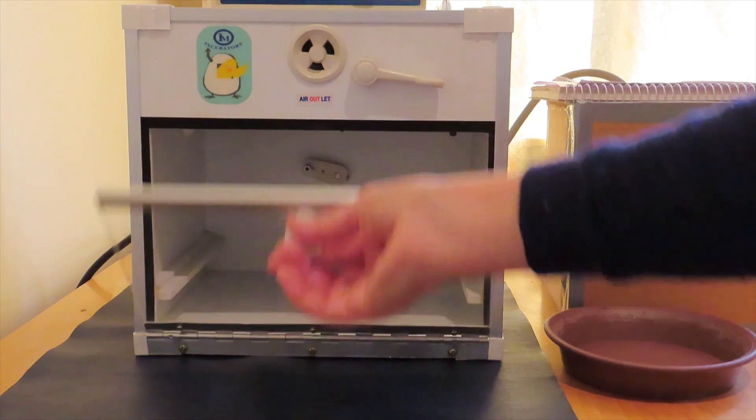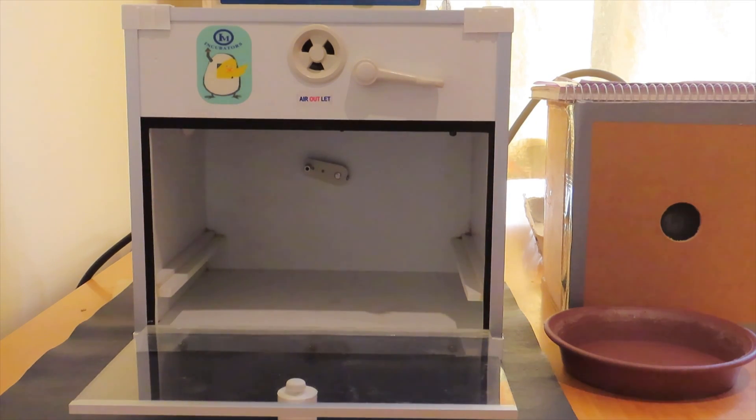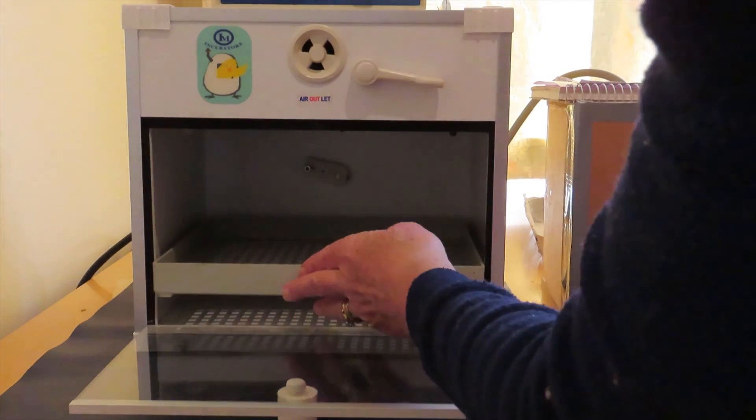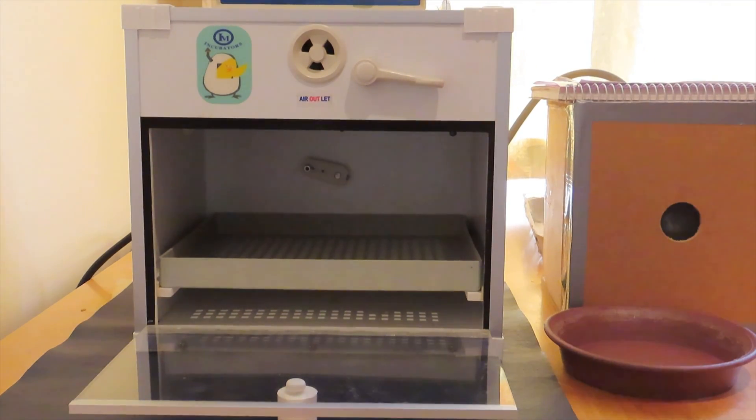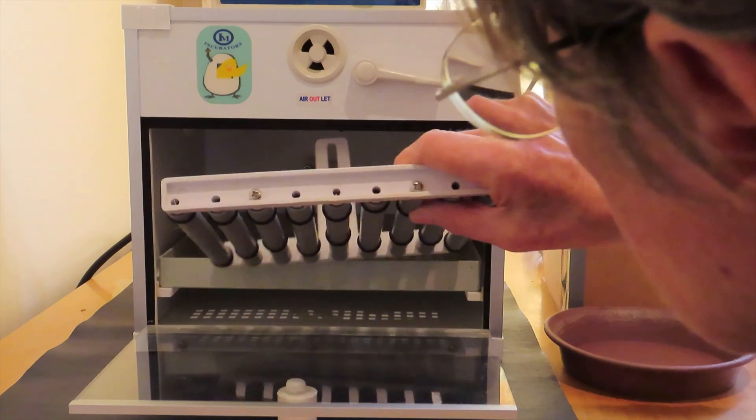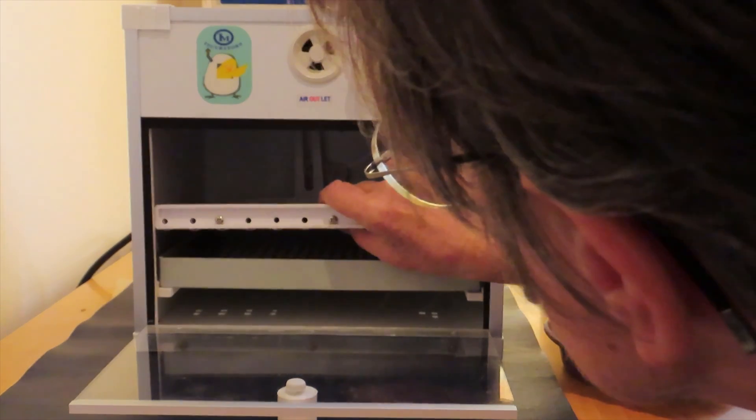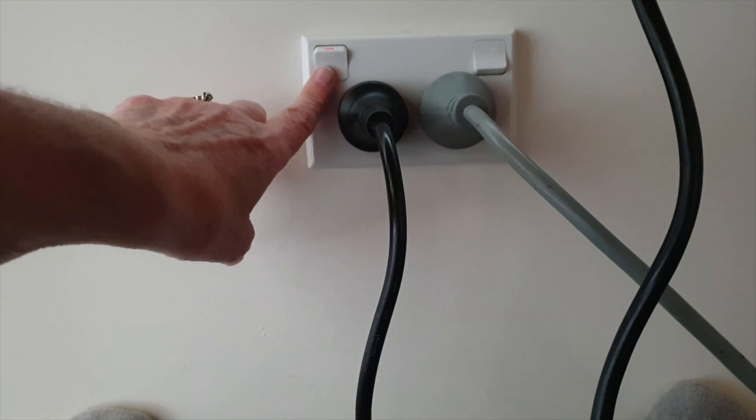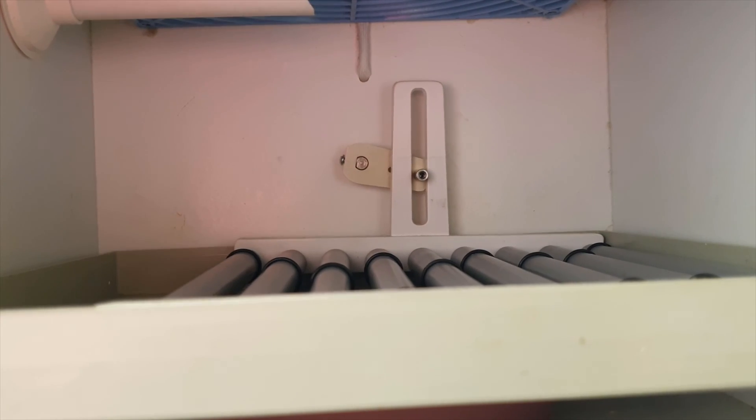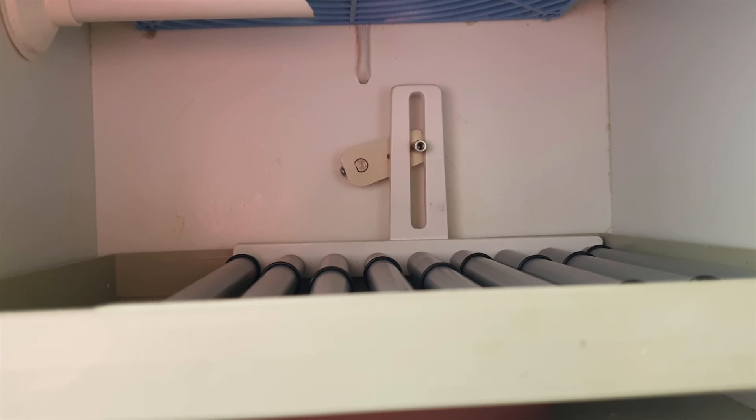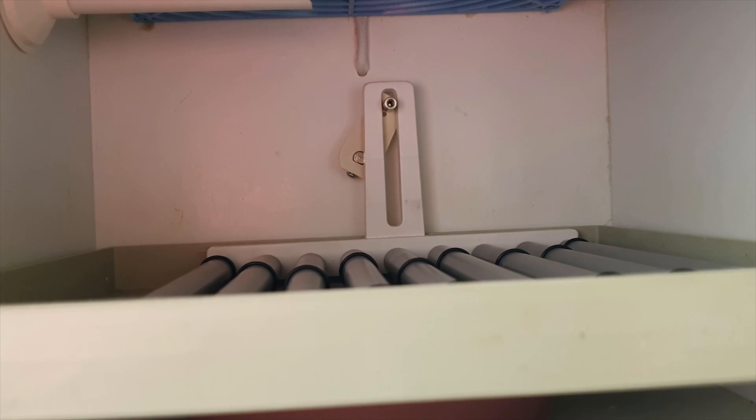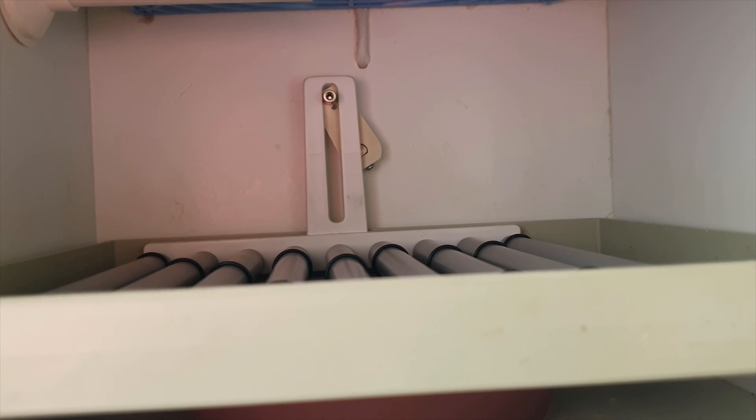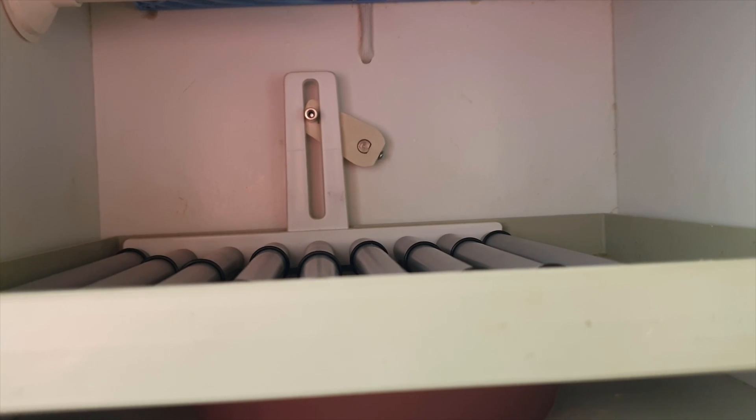My incubator has a tray that just slides in and a set of rollers that sits on top. The rollers are the automatic turning device. They attach to this rotating wheel at the back and about once an hour the rotating wheel sends the rollers across the incubator. As the rollers turn, the eggs on top of them get turned.